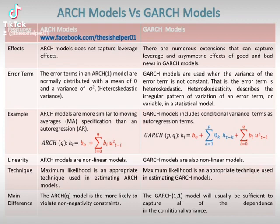ARCH models are more similar to moving averages, MA specification, than an autoregression, AR. The example of an ARCH model is given for idea and comparison. Whereas GARCH models include conditional variance terms as autoregression terms. The example of a GARCH model is given for idea and comparison.